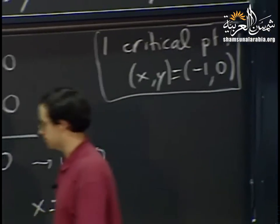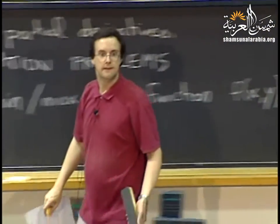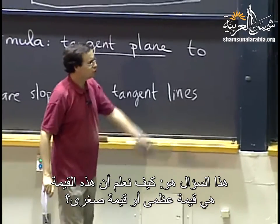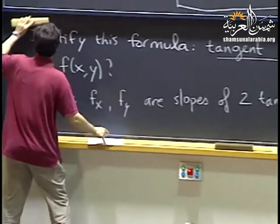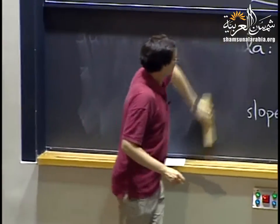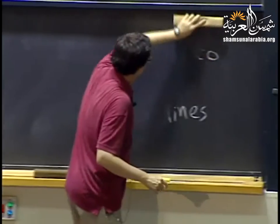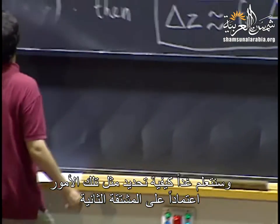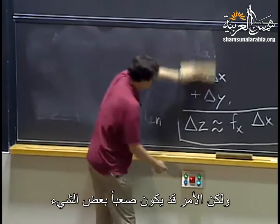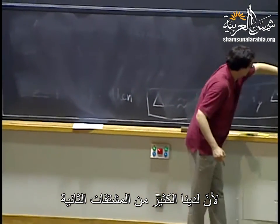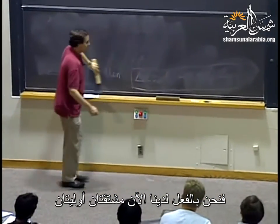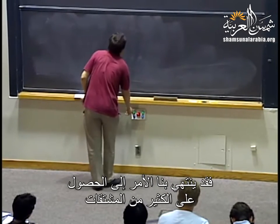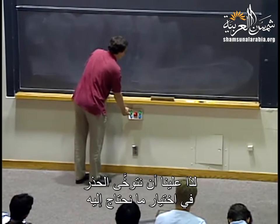The question should be: how do we know if it's a maximum or a minimum? If we had a function of one variable, we would decide based on the second derivative. We'll see tomorrow how to do this using the second derivative, which is tricky because there are many second derivatives. We'll have to figure out carefully what the condition should be.